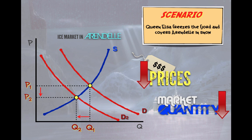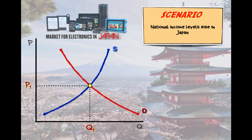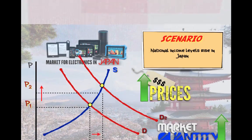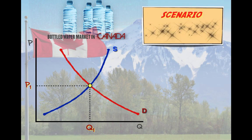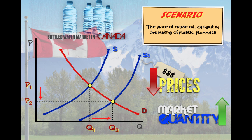Let's do some practice with changes in supply and demand and try to predict how price level and output will be affected in the market. Here we have a graph for the electronics market in Japan. Suppose that the national income level in Japan were to rise — demand for electronics will increase now that consumers have more income to spend, causing prices of electronics to increase and the quantity sold on the market to increase. Next, here we see the market for bottled water in Canada. Suppose that the price of crude oil, an input used in making plastic, were to plummet. It's now cheaper to produce bottled water, so the supply of bottled water in Canada will increase, causing the price to decrease and the quantity sold on the market to increase.